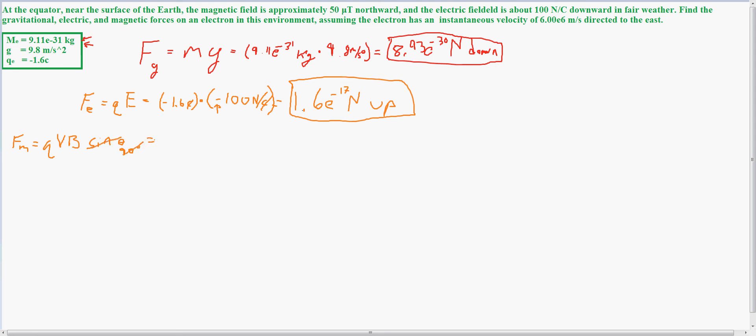So sine just cancels out because that'll equal 1. So this doesn't matter. So now we have qvB.